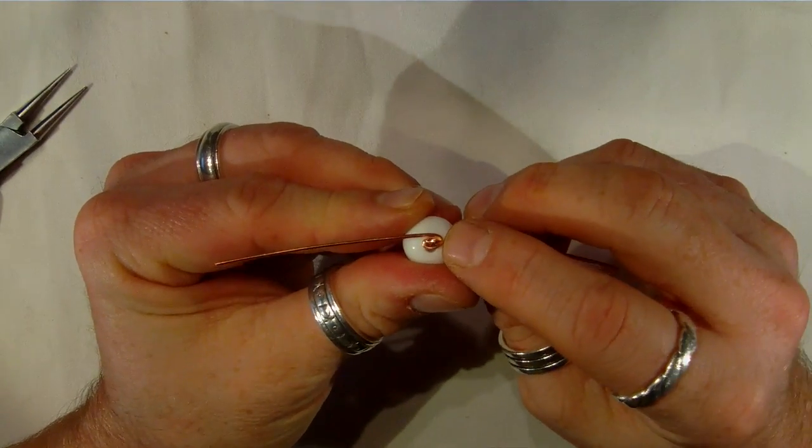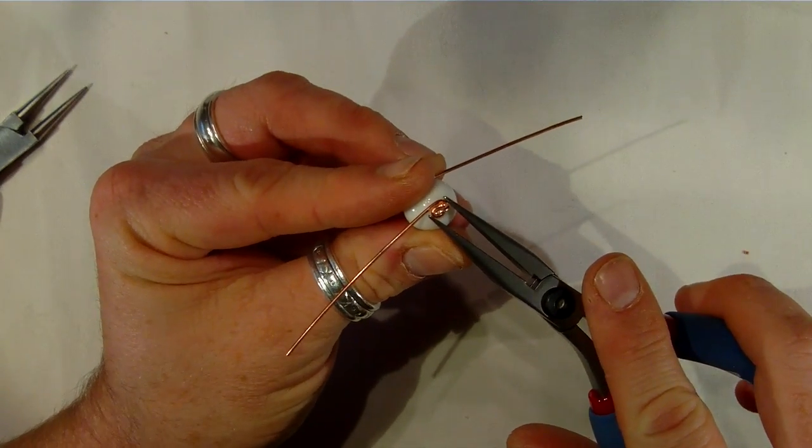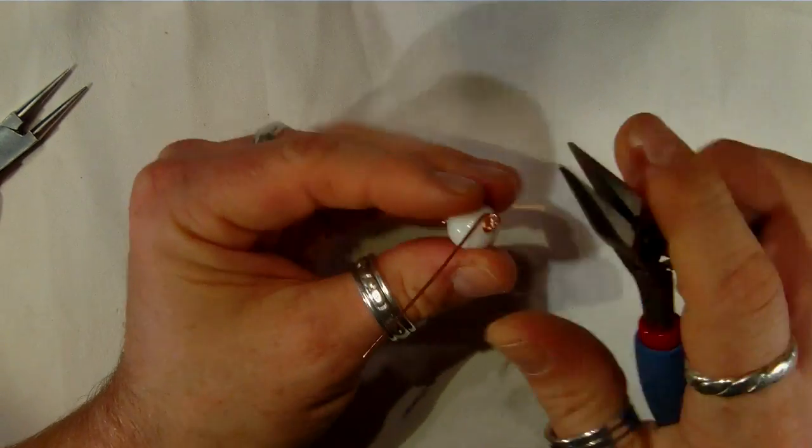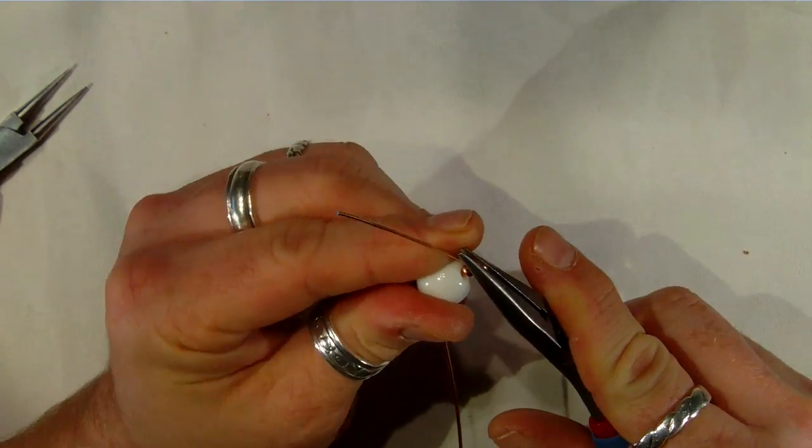As you can see, it's a bit of an oblong shape. So we're going to take our chain nose pliers and give that wrap a squeeze to make it circular. Do the same again on the other side. This means we get a nice circular bead cap.